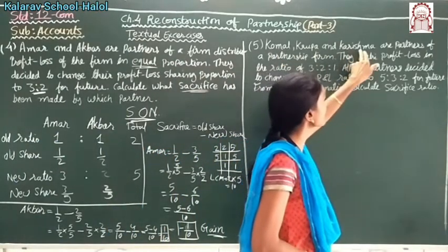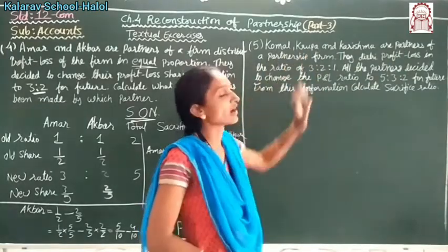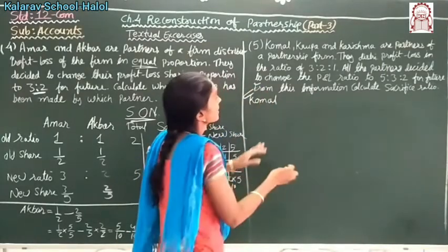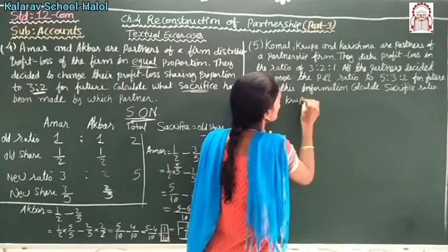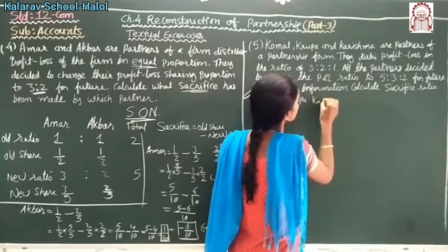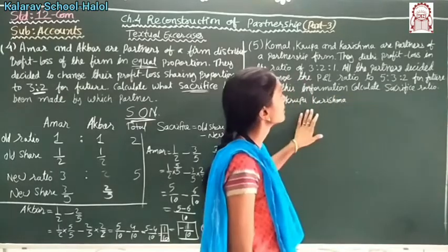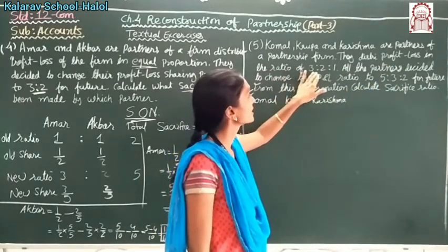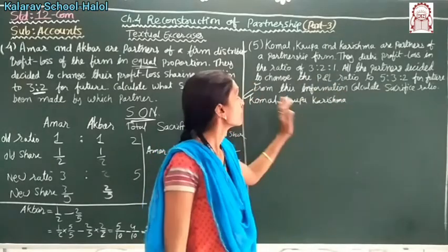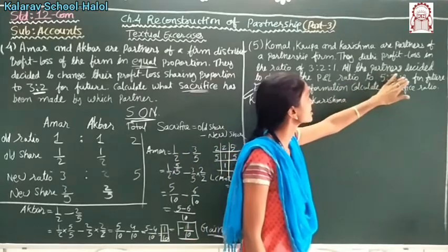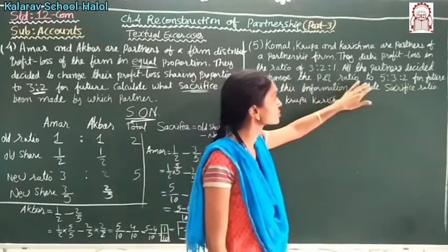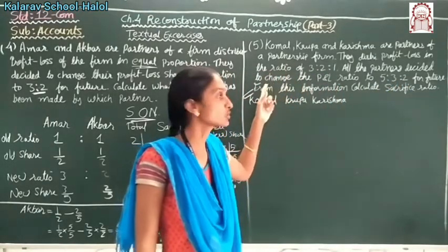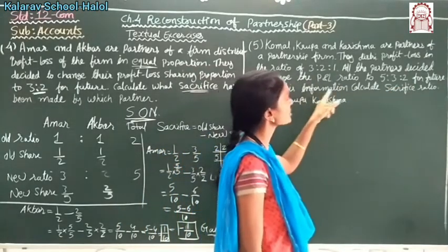Now next, the 5th number sum. Komal, Krupa, and Karishma are partners of a partnership firm — there are three partners. They distribute profit and loss in the ratio of 3 is to 2 is to 1. Here the old ratio is given. All the partners decided to change their profit and loss ratio to 5 is to 3 is to 2 for future — so the new ratio is also given.